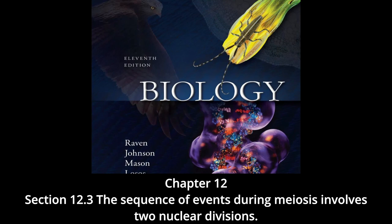Cytokinesis may or may not occur after telophase one. The second meiotic division, meiosis two, occurs after an interval of variable length. After a typically brief interphase in which no DNA synthesis occurs, the second meiotic division begins. Meiosis two resembles a normal mitotic division — prophase two, metaphase two, anaphase two, and telophase two follow in quick succession.